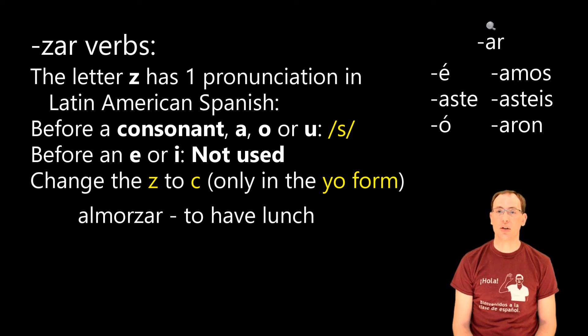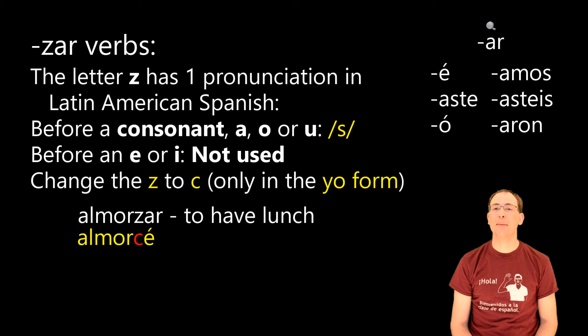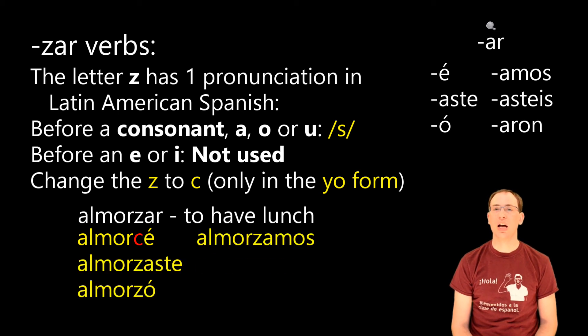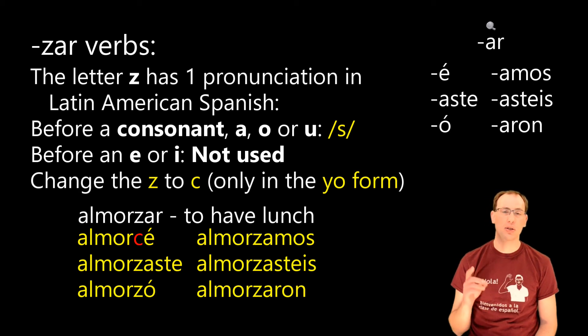So a verb like almorzar, to have lunch, would be conjugated like this. In the yo form, almorcé, and that's going to be spelled A-L-M-O-R-C-E with an accent. The rest of the forms keep the z in the stem: almorzaste, almorzó, almorzamos, almorzastes, almorzaron. Now this is also a good place to remind you that while almorzar is a shoe verb in the present tense, there are no shoe verbs in the preterite. So we don't have to worry about any of those shoe verb stem changes.